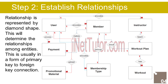6. Member belongs to a specific type of membership plan — 1 to 1 relationship. 7. Member makes payment for the membership and other fees — 1 to many relationship. 8. Member can only enroll to a specific workout plan — 1 to 1 relationship. 9. Instructor teaches or guides a specific workout plan — 1 to 1 relationship.